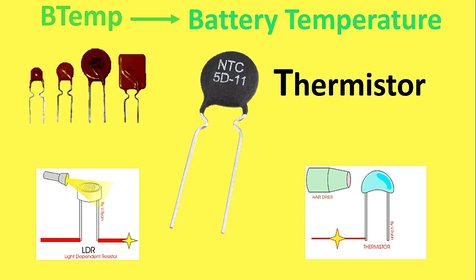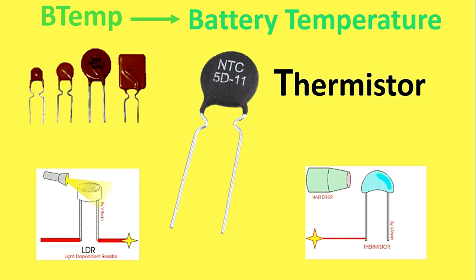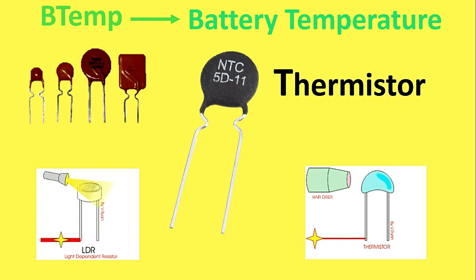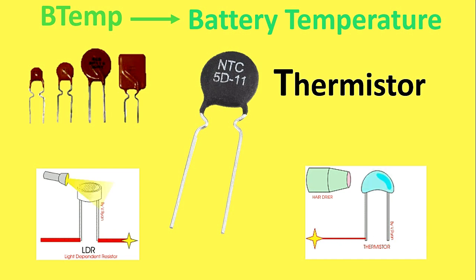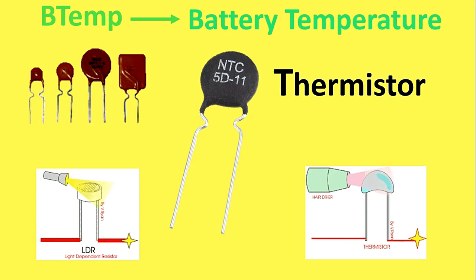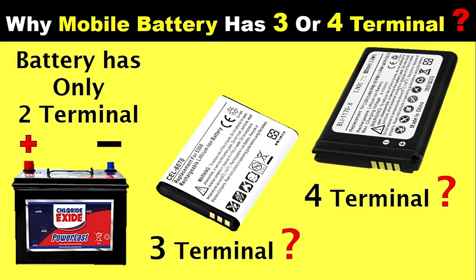The thermistor is connected inside the battery. When the temperature of the phone battery increases, the resistance of the thermistor decreases and it allows a signal to flow forward. This signal is sensed by the mobile phone, which then either reboots the phone or gives an indication or notification that the mobile is overheating.